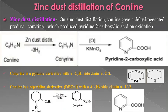Next we come to the degradation methods of conine. First is zinc dust distillation, which gives an important idea about the carbon skeleton present in conine. On zinc dust distillation, conine loses three molecules of hydrogen and converts into conicine — six hydrogen atoms fewer in conicine compared to conine. Conicine on further oxidation with KMnO₄ converts into pyridine-2-carboxylic acid.